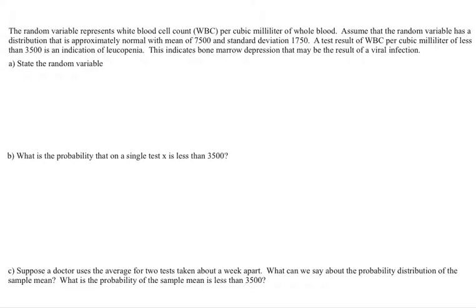This example uses the concept of a sampling distribution and the central limit theorem. We have a random variable, in this case white blood cells. We're going to assume it has an approximately normal distribution with a certain mean and standard deviation, and we want to test if a white blood cell count less than 3,500 is an indication of leukopenia, which is an indication of bone marrow depression that may be a result of a viral infection.